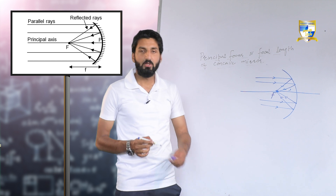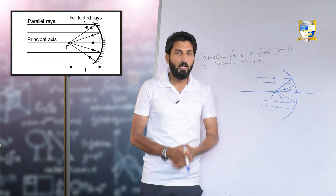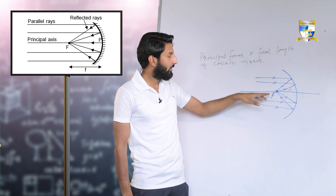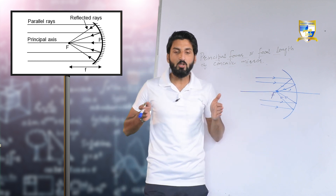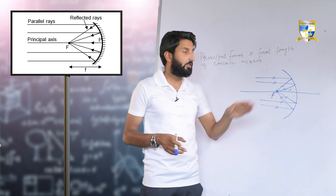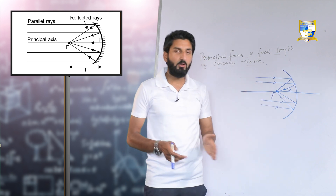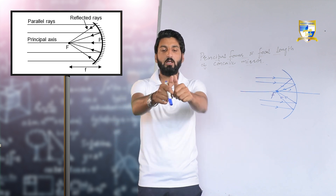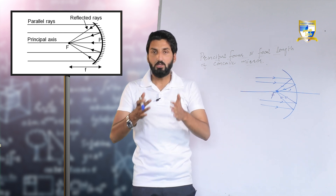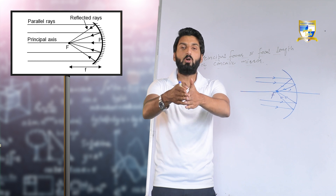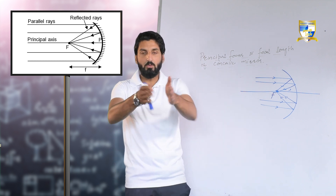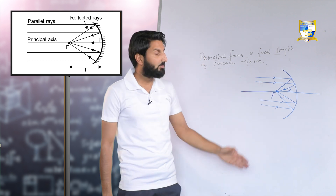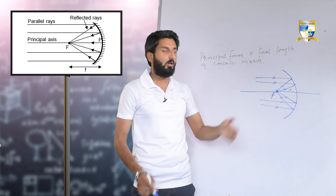This common point on the principal axis of the mirror where the rays of light meet after reflection from the mirror is known as the principal focus, represented by capital F. The rays of light come in parallel to the principal axis and after reflection from the mirror they get converged, meeting at a common point on the principal axis of the mirror.